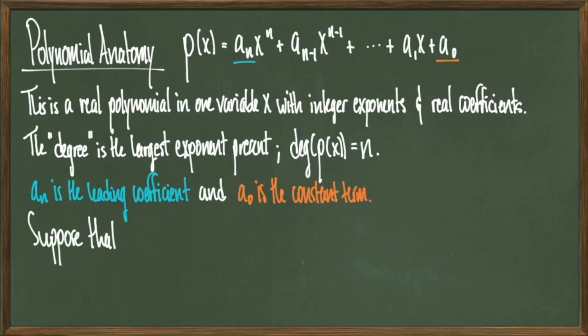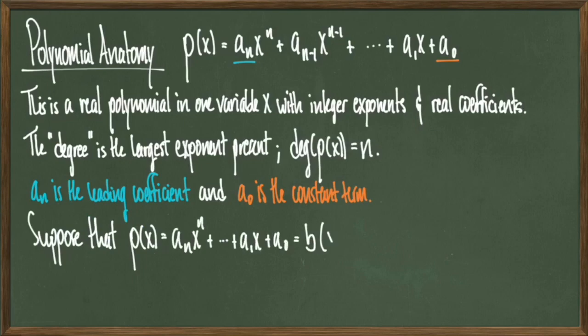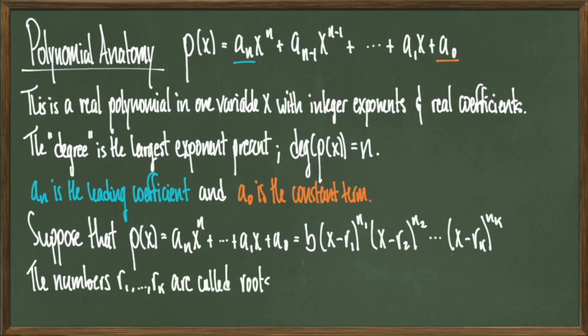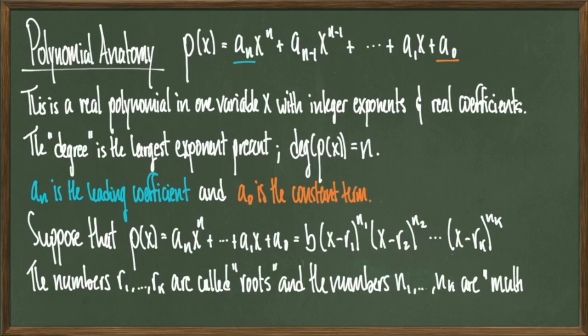In this video we'll be looking at polynomials that factor into linear terms. Suppose that p(x) can be factored into some number b times (x minus r₁) to the n₁ power times (x minus r₂) to the n₂ power, all the way down to (x minus rₖ) to the nₖ power. Just know that each of these components is a linear term where each of the subscripted r's are called roots, and all of the powers n₁, n₂, up to nₖ are called multiplicities of those roots. Sometimes these roots are called zeros.